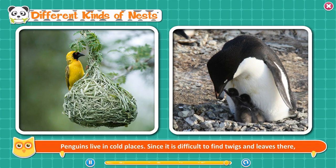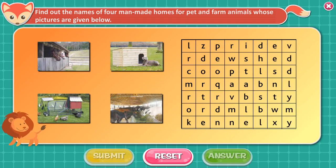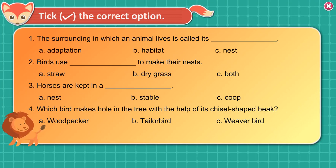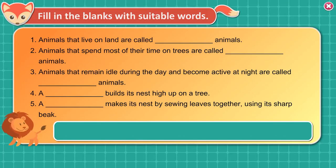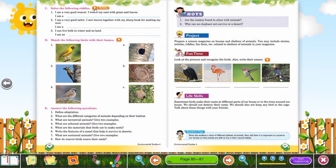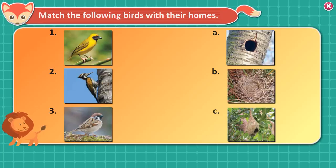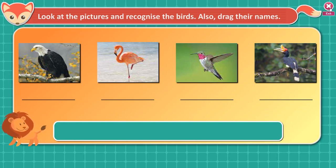Penguins live in cold places. Since it is difficult to find twigs and leaves there, penguins simply put together a few pebbles and their nest is ready. Activity: Find out the names of four man-made homes for pet and farm animals. Pick the correct option. Fill in the blanks with suitable words. Solve the following riddles. Match the following birds with their homes. Fun time: look at the pictures and recognize the birds.